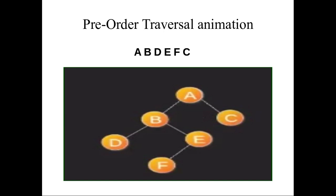So C will be visited and marked as visited. This is the example for preorder traversal with six nodes. If you have any doubts regarding preorder traversal, or if you want to write a preorder traversal for any binary tree, you can comment. Thank you. We will meet in the next video.